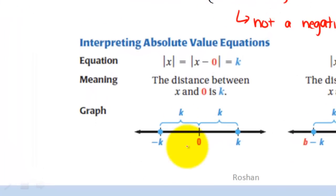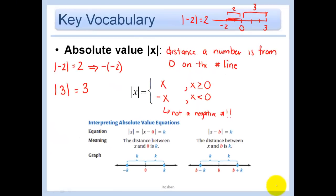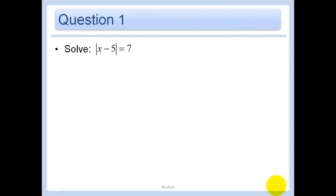This is just the distance from 0 on the number line. In another example, it's the distance that x is from another number like b — if you write x minus some other number, that distance can be k. We'll talk a lot more about that at the end.